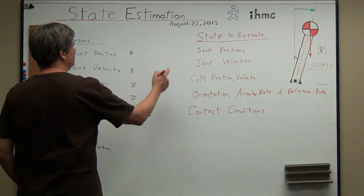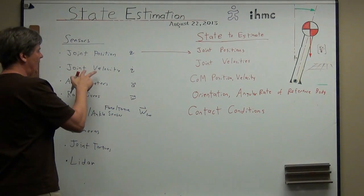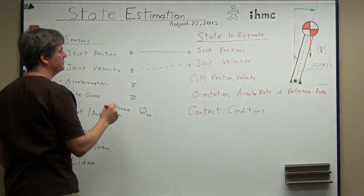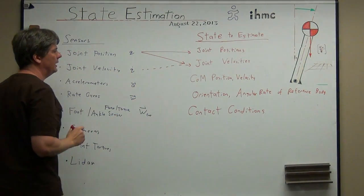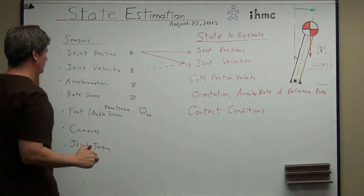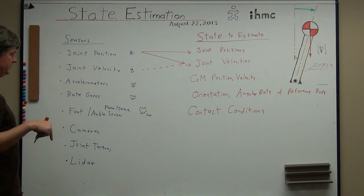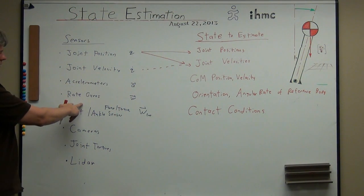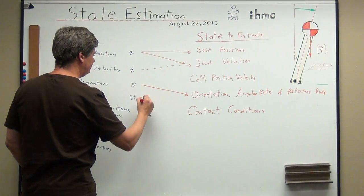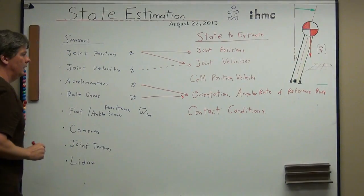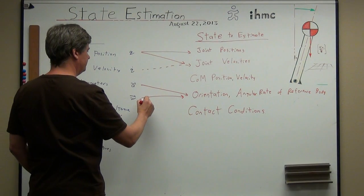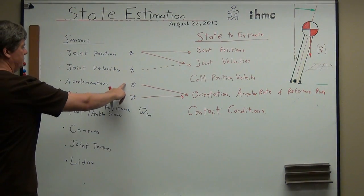Some of these map directly. To get joint positions, you just read the joint positions. If you have joint velocity measurements, well then you just have them, but sometimes you don't have those sensors, so you have to differentiate the joint position somehow. To get the orientation at low frequency, you can use the accelerometers — they'll tell you which way is down. At high frequencies, you can use the rate gyro, which tells you which way down is changing. You fuse these two together to get orientation.